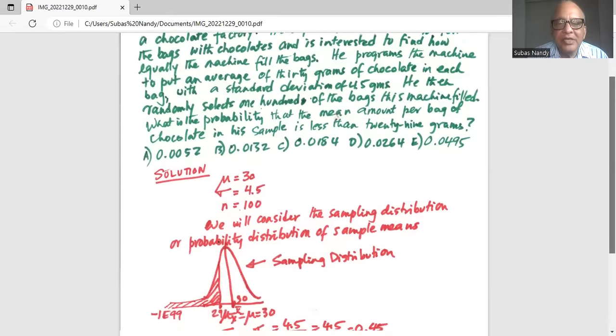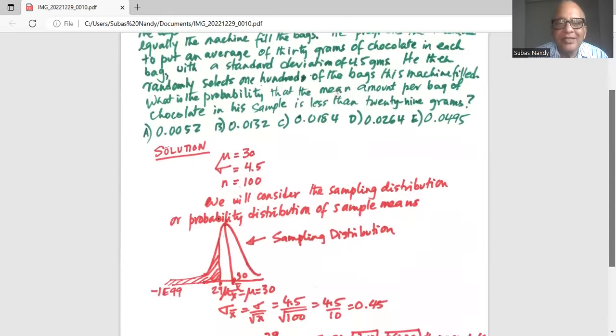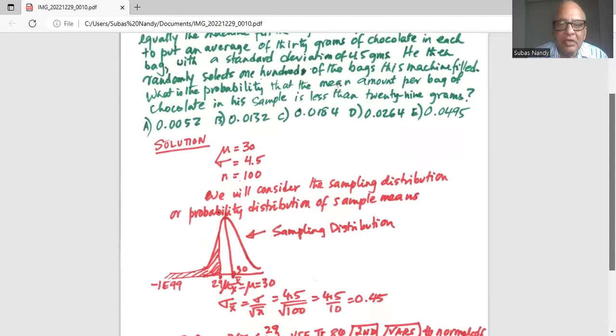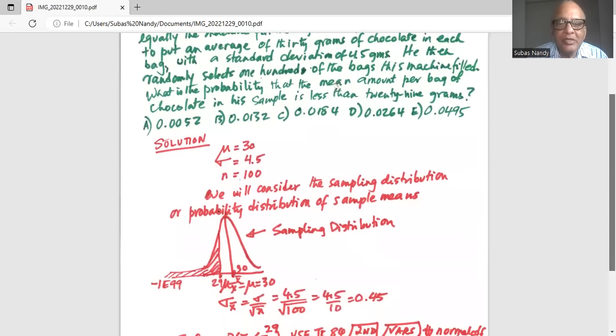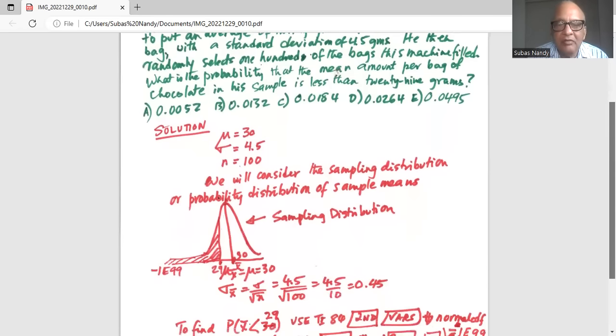The solution: mu is 30, sigma is 4.5, n is 100, sample size is 100. We will consider the sampling distribution or probability distribution of sample means. And I've drawn a bell-shaped curve to show you the sampling distribution. Its mean mu x bar is equal to mu equal to 30.